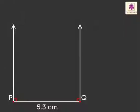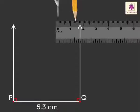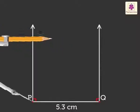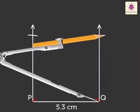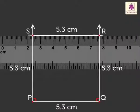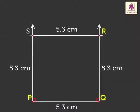Step 3: Draw arcs of radius 5.3 cm from P and Q, and name the points S and R respectively. Lastly, Step 4: Join SR to obtain square PQRS.